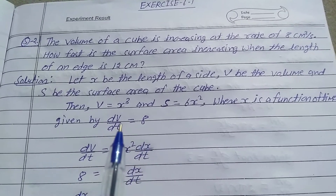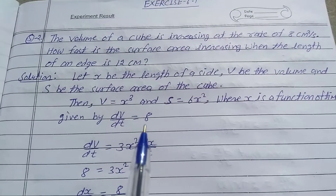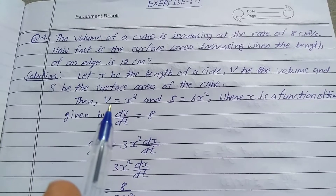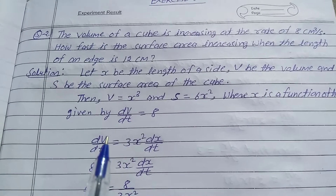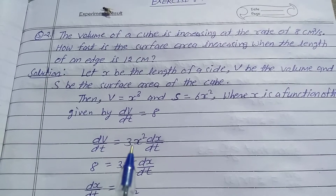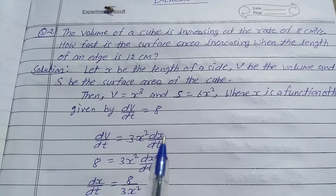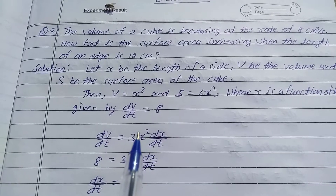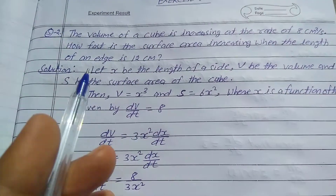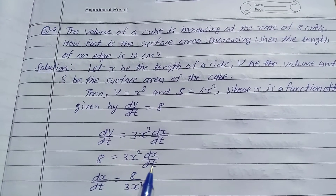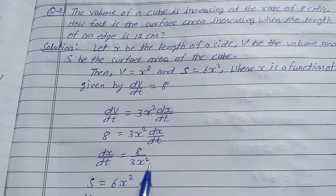Given that dV/dt is equal to 8 cm³/s, which is the increasing rate of change of volume. Differentiating V = x³ with respect to t: dV/dt is equal to 3x² times dx/dt. We know dV/dt equals 8, so putting the value: 8 = 3x² dx/dt, therefore dx/dt is equal to 8 divided by 3x².